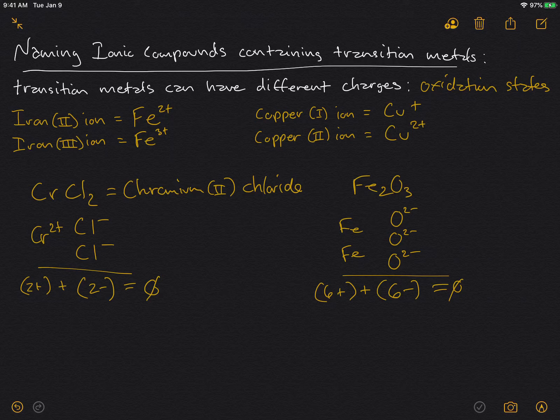So one thing you can do is divide the total charge by the number of ions, and that will tell you the charge on iron. So iron, in this case, is 3+, and we have two of those.